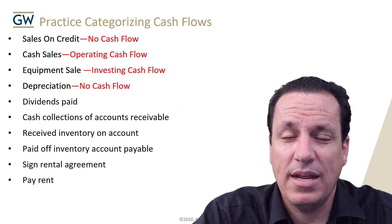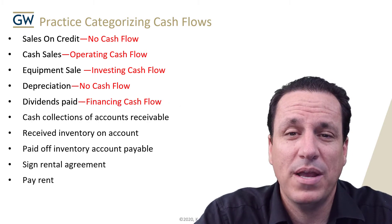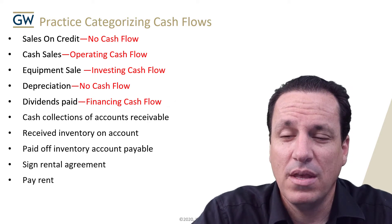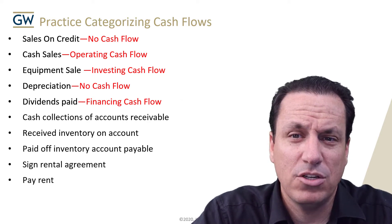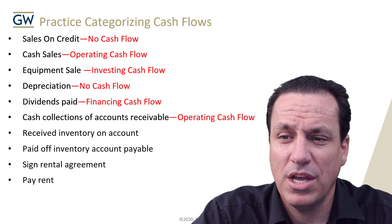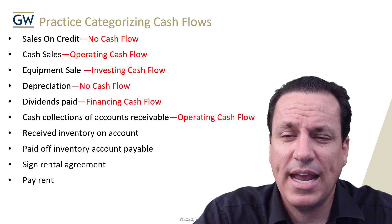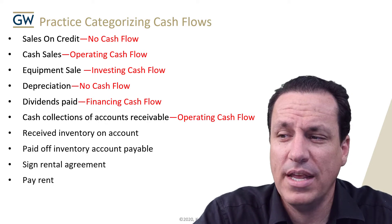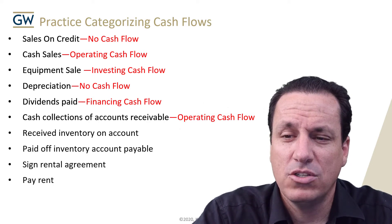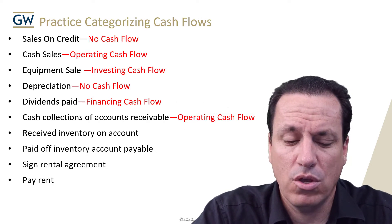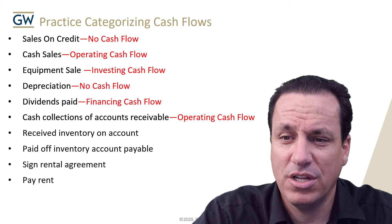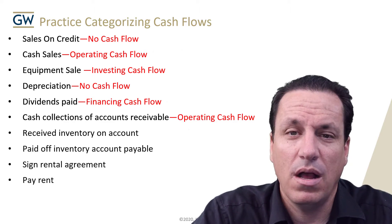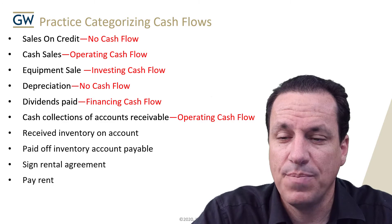Dividends paid are going to be a financing cash flow — these are dividends paid to shareholders. Cash collections of accounts receivable are going to be an operating cash flow. So if you collect on prior sales, cash collections of accounts receivable, that's related to your core operations.